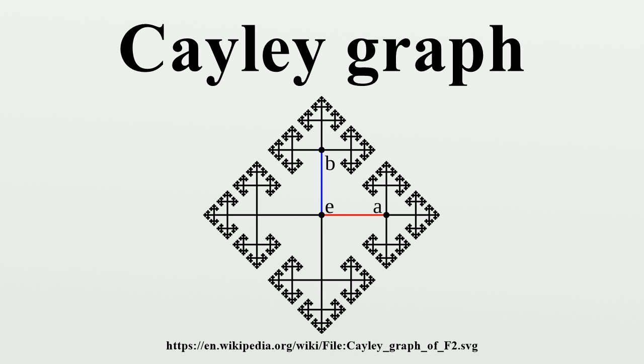If is a surjective group homomorphism and the images of the elements of the generating set are distinct, then it induces a covering of graphs. In particular, if a group has generators, all of order different from two, and the set consists of these generators together with their inverses, then the Cayley graph is covered by the infinite regular tree of degree corresponding to the free group on the same set of generators.